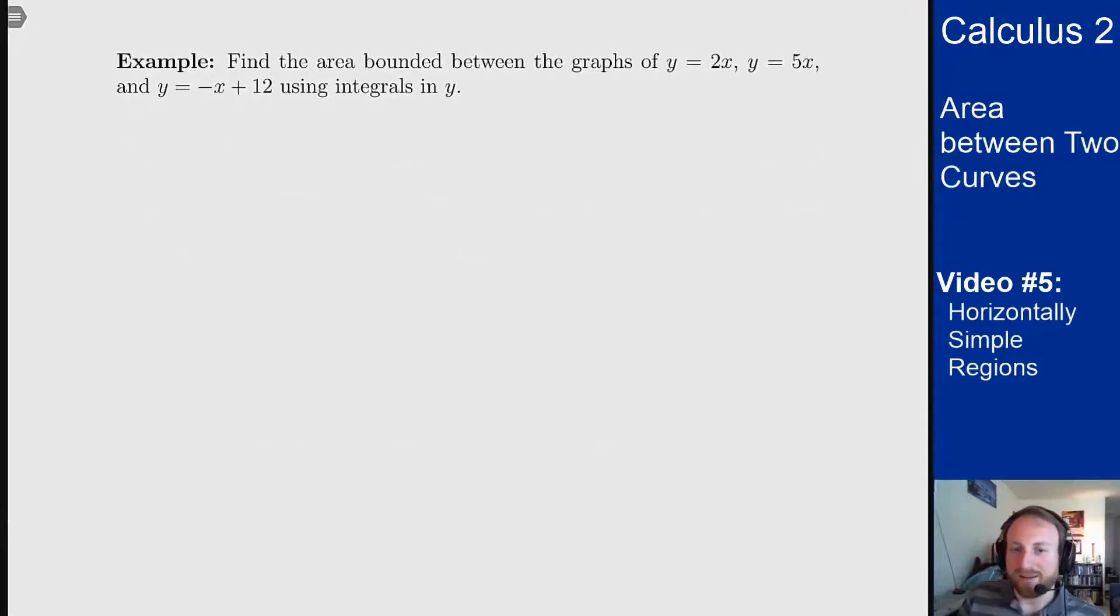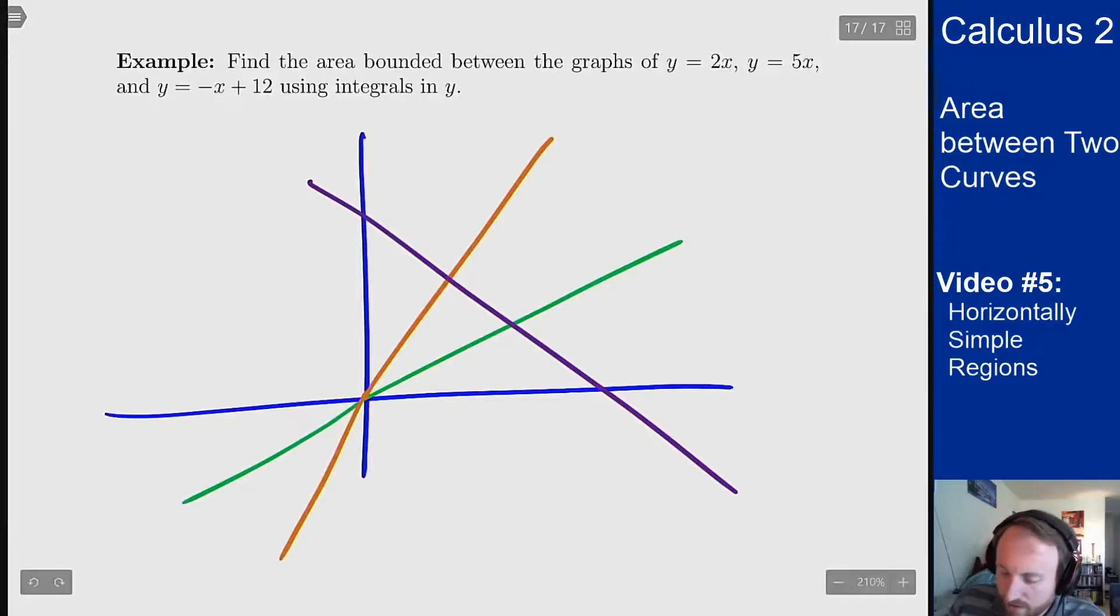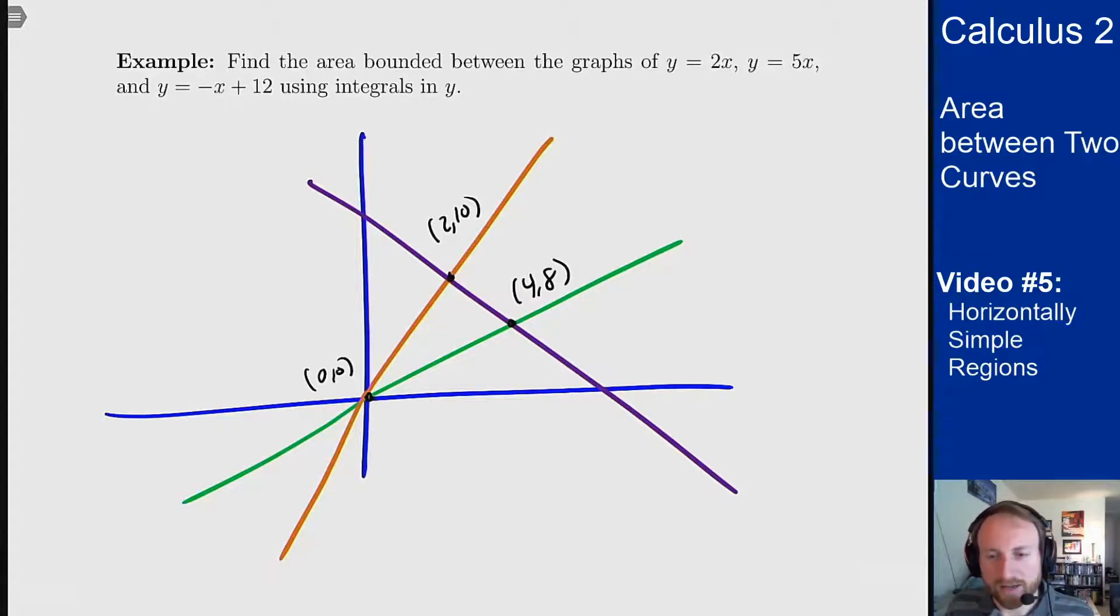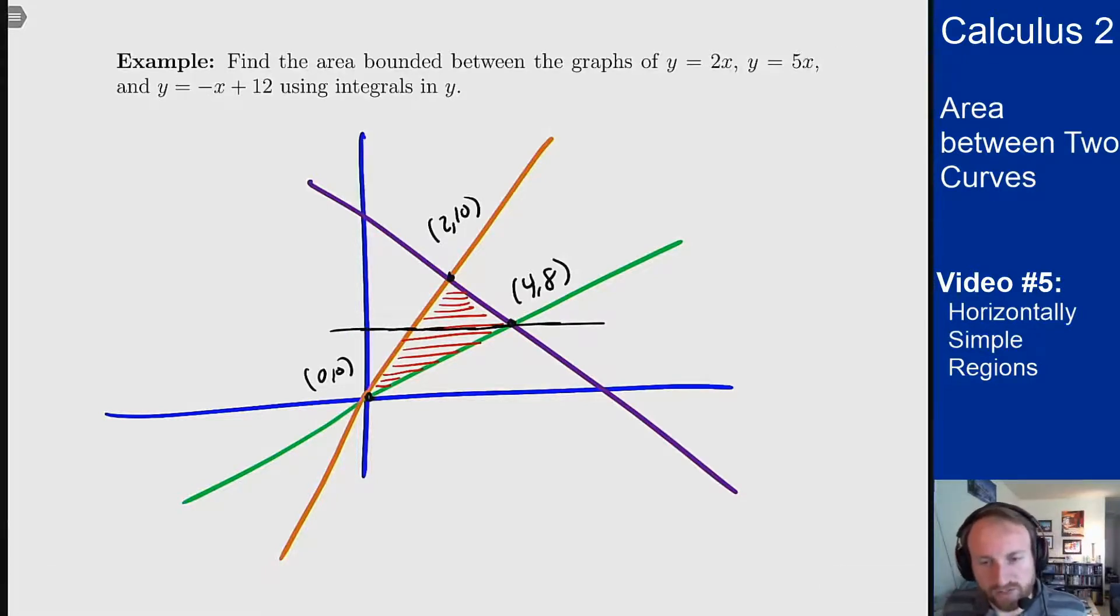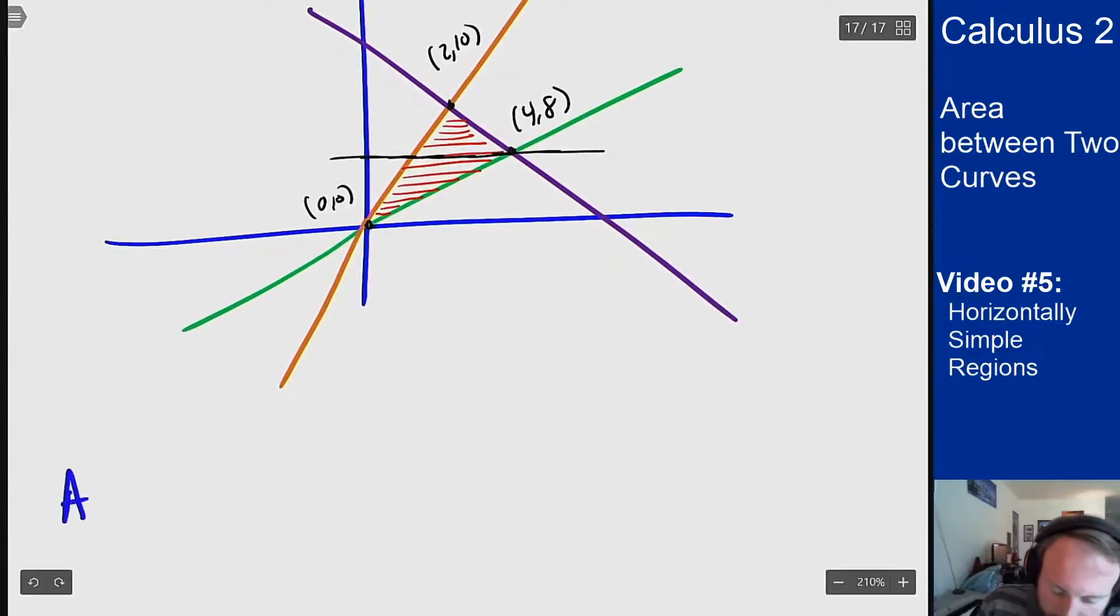Here's the example we did before but now I want to do it with y integrals instead of x integrals. So it's y equals 2x, y equals 5x, and y equals negative x plus 12. I'll draw the picture here again. And again we're finding this region here in the middle. And last time we found the intersection points so I'll just write those down here again. Now since I want to do this with integrals in y, I want to picture drawing horizontal slices and those tiling up over my region. So I'll have slices like this that I'm going to add up with dy integrals. So again this region is not horizontally simple either but I can break into two pieces that are by drawing a line across here at y equals 8. So we're going to have two separate regions here and have two separate integrals.